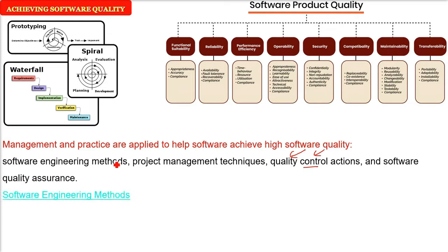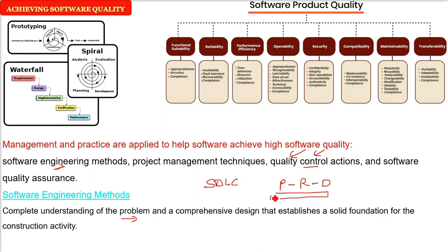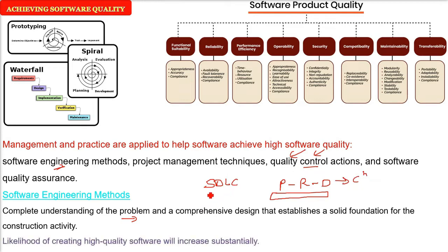Starting with the software engineering method — SDLC, software development life cycle. You choose prototyping, waterfall, spiral, agile, whichever you want. The basic idea is to completely understand the problem, then design comprehensively. Proper understanding, getting the requirements, knowing the requirements, designing it — this will be a solid foundation for construction, coding, and testing. When you do this, the quality of the software is going to increase substantially.